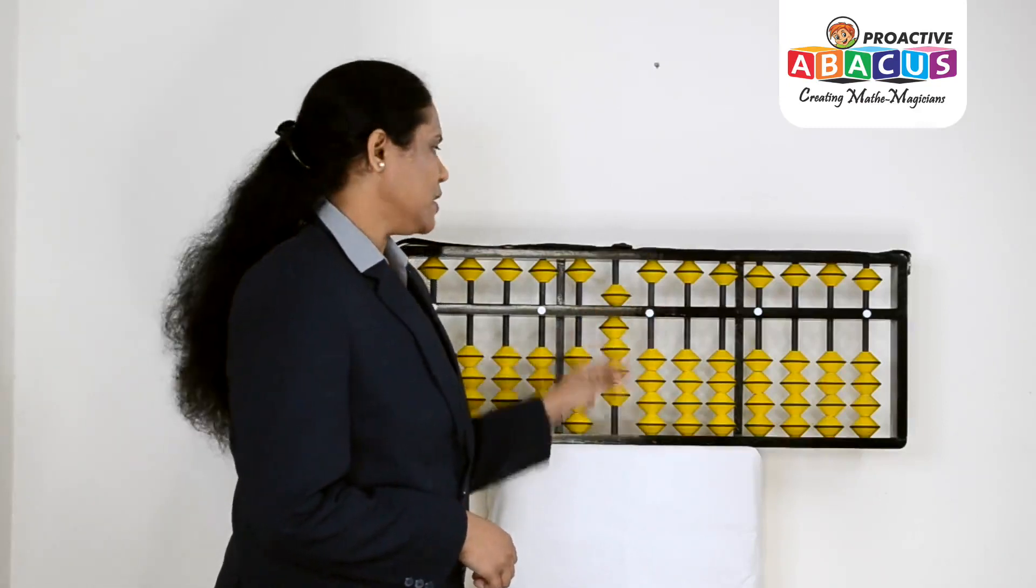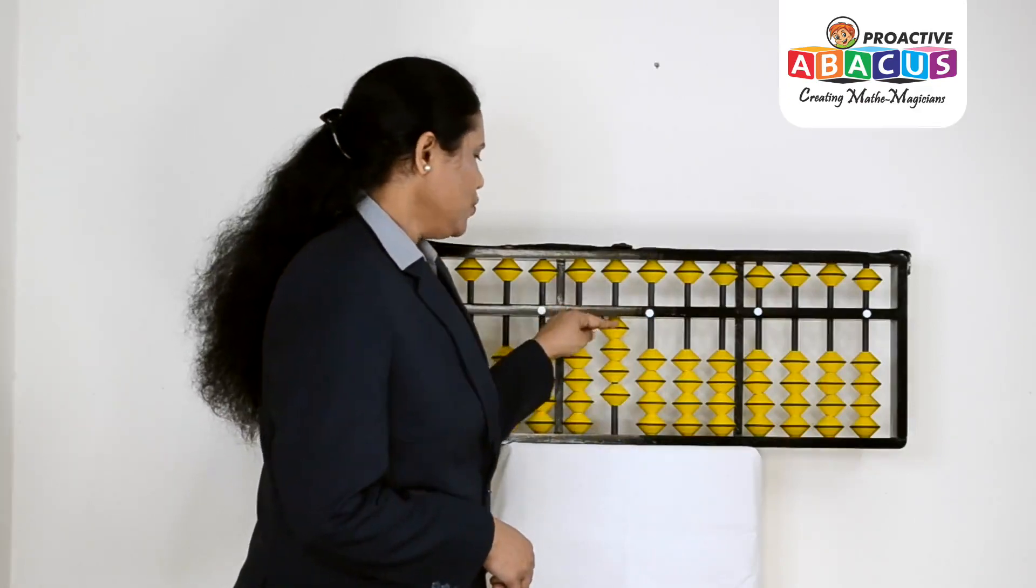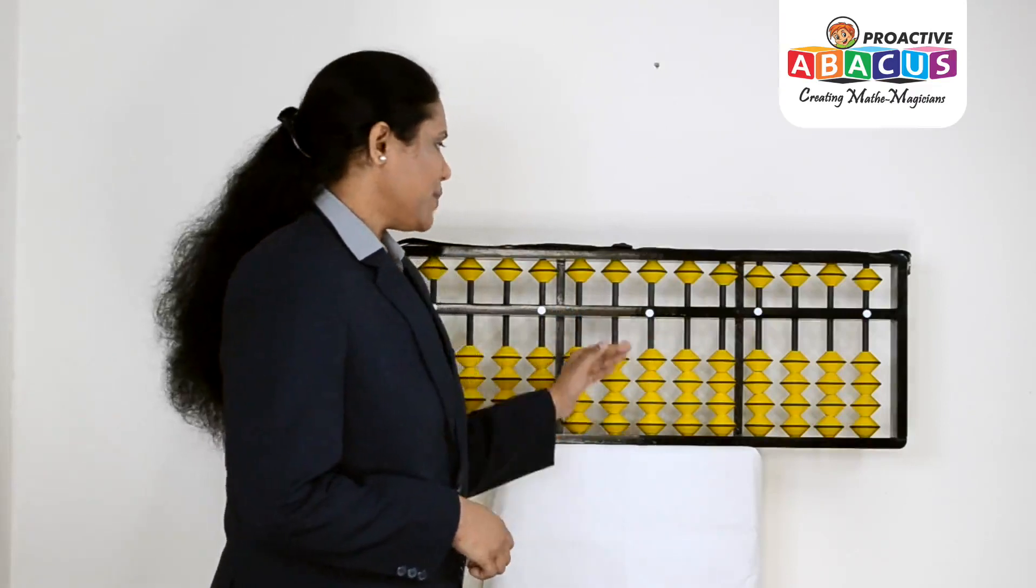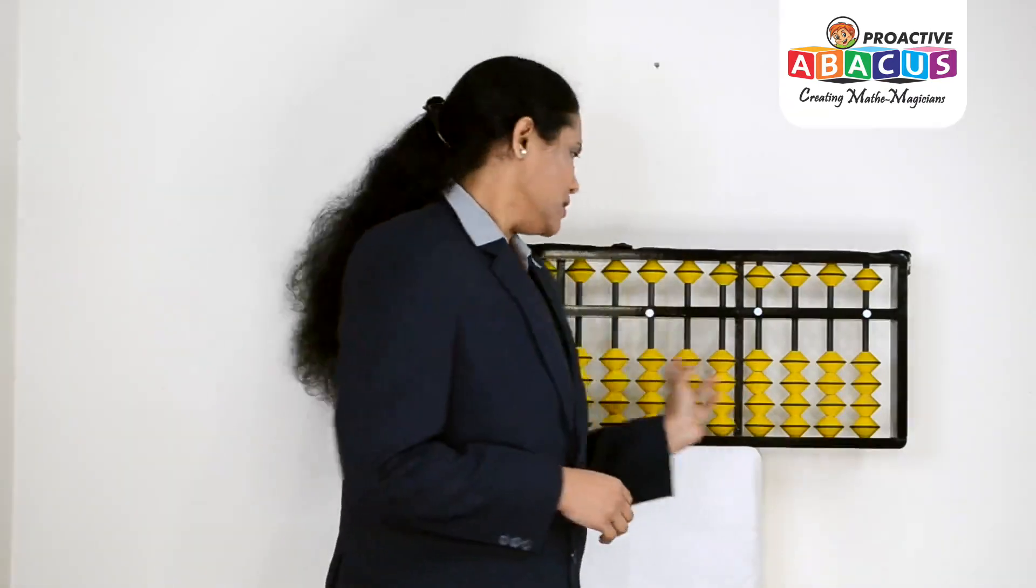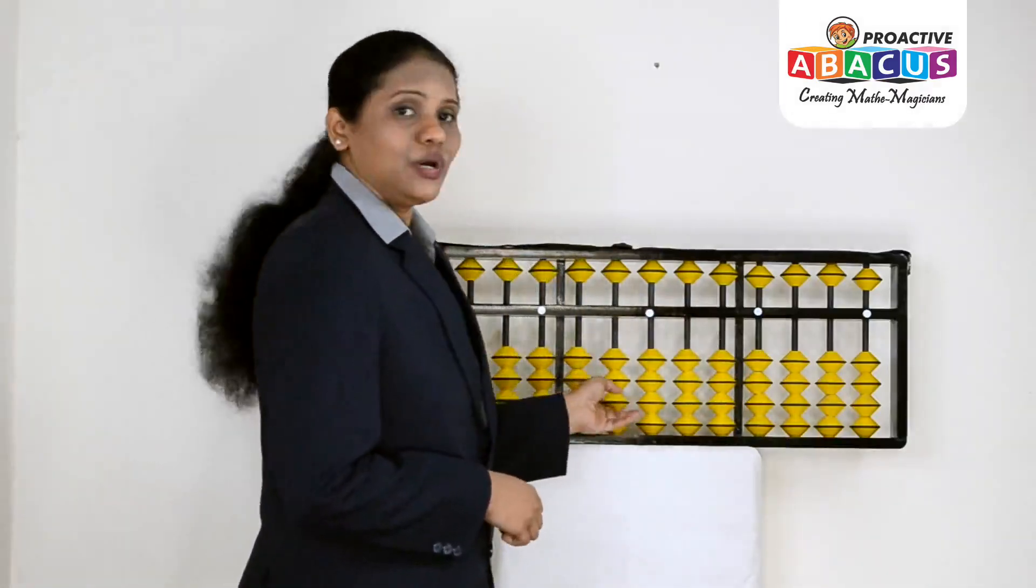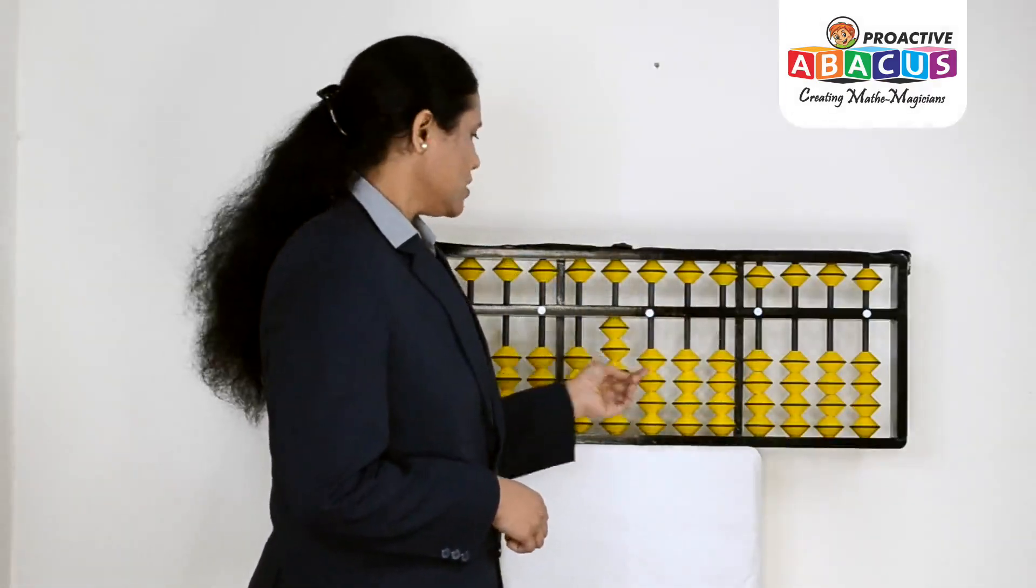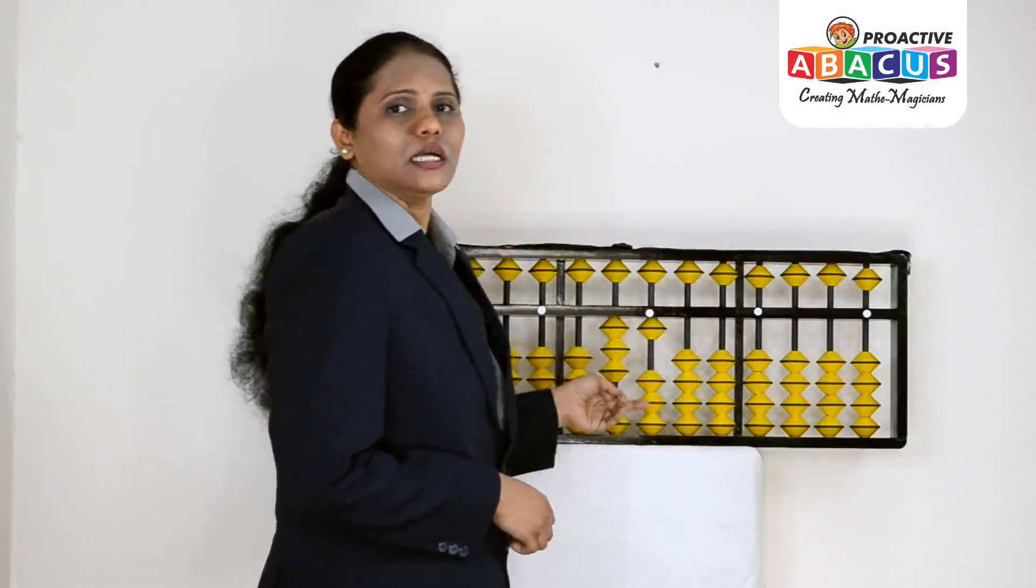Now let's start with numbers from 1 to 90 count. We have tens and unit on the same rod. Let's start with number 31. Tens place is 3, unit is 1, that's 31.